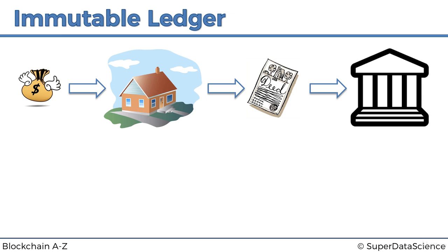You need to register your ownership with the local authority, and how do they register it? Well, they write it down in a ledger — in fact, they always write it down in a ledger. In some cases more modern governments use digital ledgers, but I was very surprised to learn that still a huge percentage of governments, especially in third-world countries, still use written ledgers — actual physical books with numbered pages where people just write down who owns what.